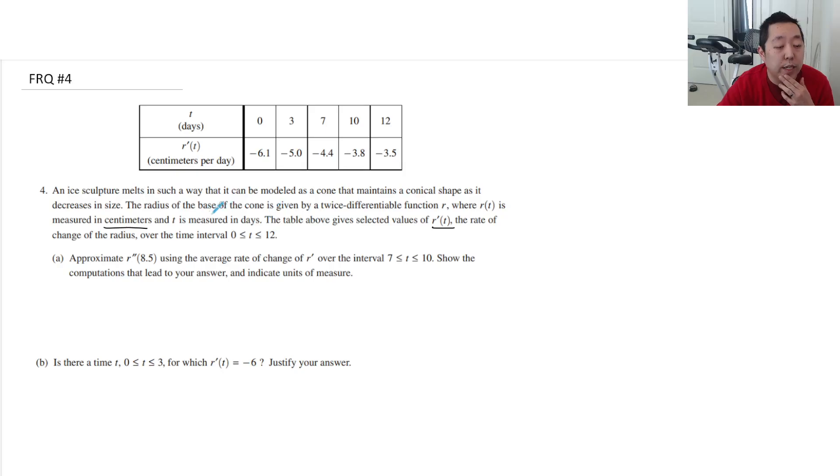Okay, so the radius of the base of the cone is given by r. r is measured in centimeters. The rate r' is given here. r' is centimeters per day. So r(t) is the radius, r' is the rate of change of the radius.